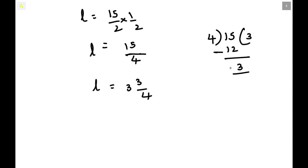First we write the quotient—this is quotient, this is remainder. This quotient will be the whole form, this remainder will be the numerator, and this divisor will be the denominator. So L value will be 3 3/4 centimeters.